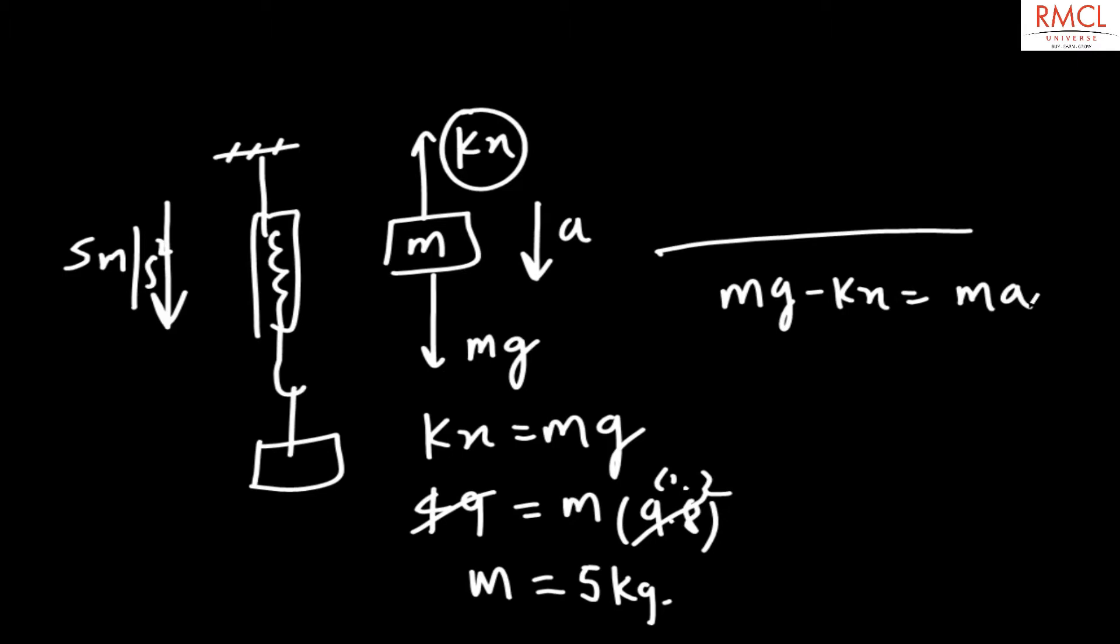What is the value of mg? The value of mg is 49 minus the reading of spring balance, which would be kx dash now, and it should be equal to mass times acceleration. So kx dash comes out to be 49 minus 25, which is 24 N.